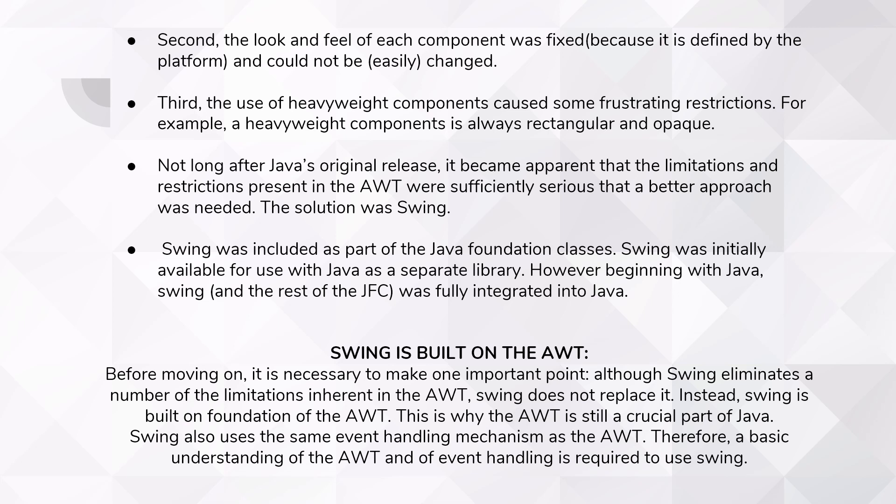Not long after Java's original release, it became apparent that the limitations and restrictions present in the AWT were sufficiently serious that a better approach was needed. The solution was Swing, and finally Swing was developed. Swing was included as part of Java Foundation Classes. Swing was initially available for use with Java as a separate library. However, beginning with a later version of Java, Swing was fully integrated into Java. This means that when Swing was developed, initially it was like a separate library added as an add-on, but later on it was fully integrated into Java.